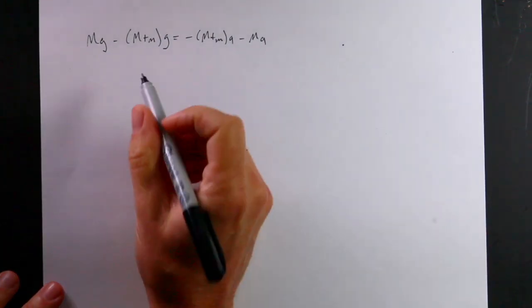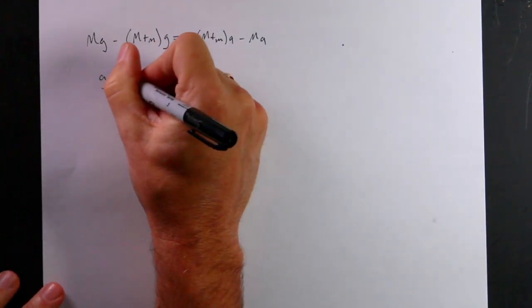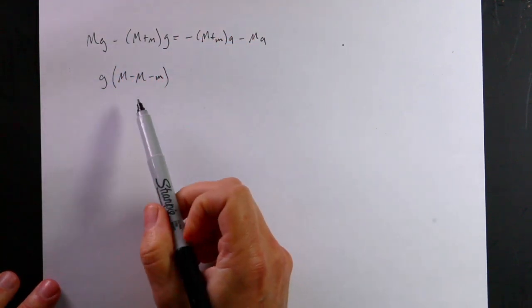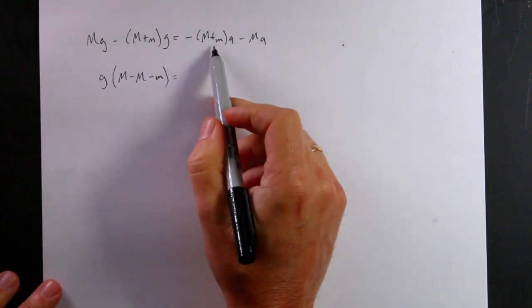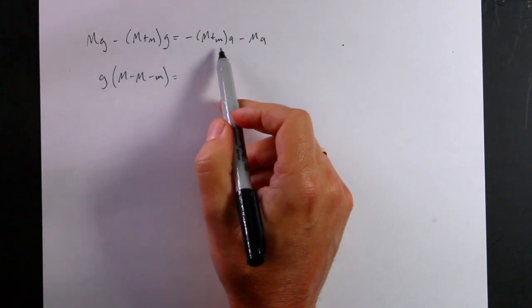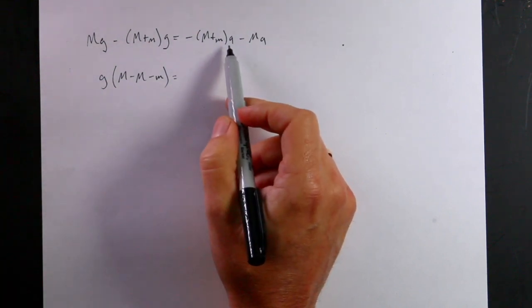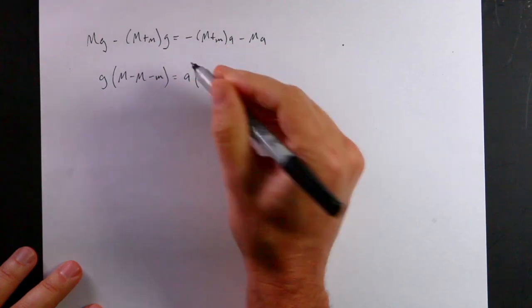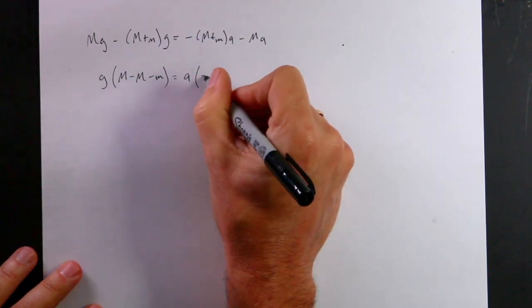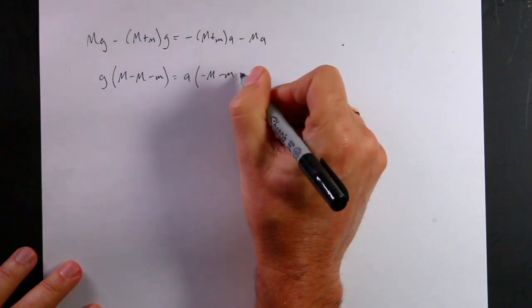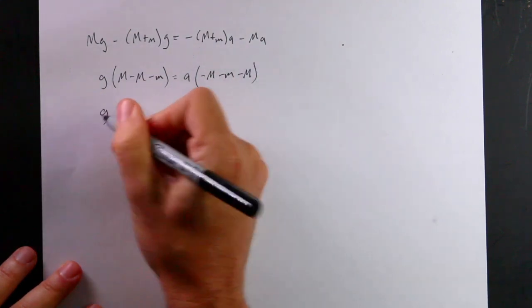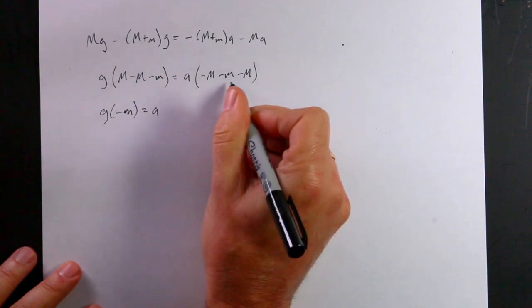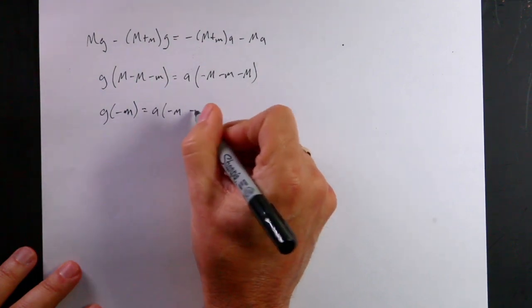Let's factor out a G, G times M minus M minus M. Yes, I'm saying it like that just to make sure that everyone knows it's dumb to have those variables. And then over here, I can factor, I'm actually going to, I don't, I do need A. Let's factor out the A. So it's going to be equal to A times, I need to pull that negative sign in, so I get negative M minus M minus M. So this becomes G times negative M equals A times negative M minus 2M.